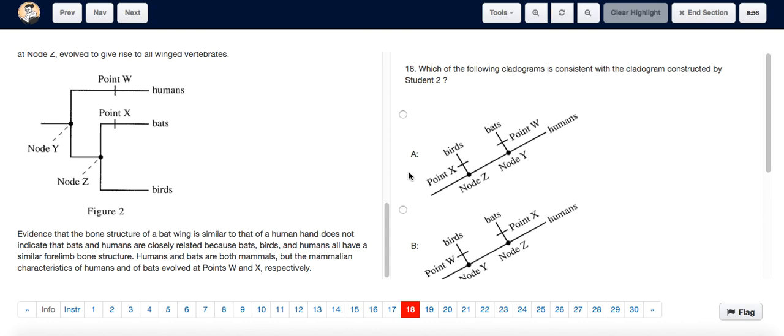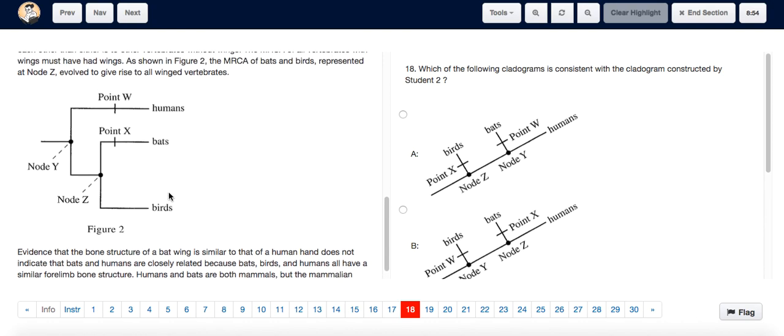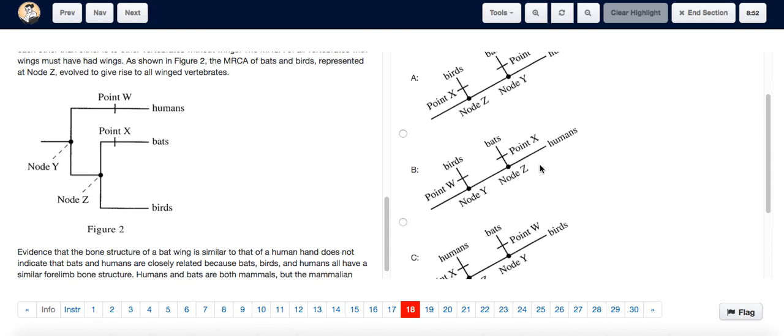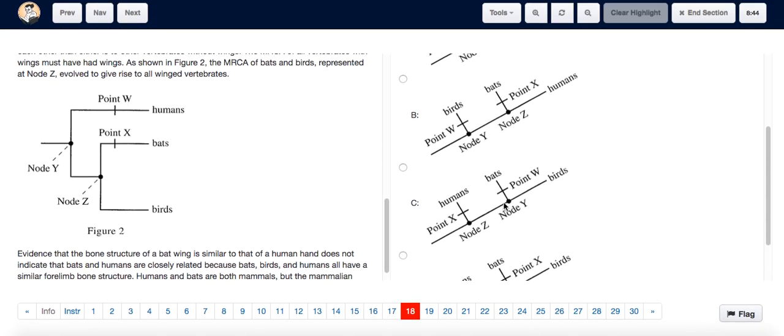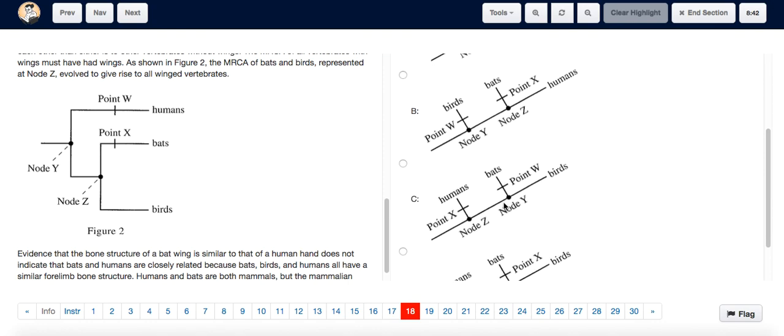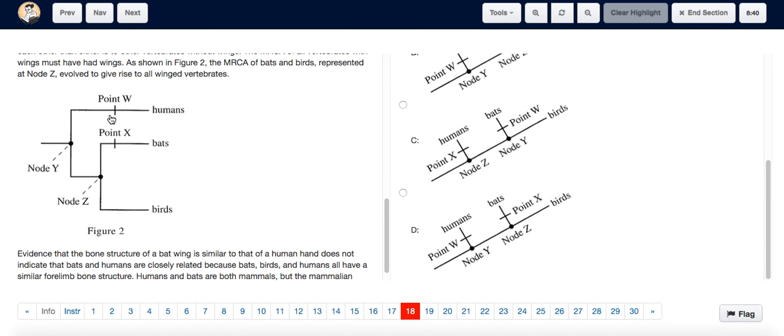For question 18, take note of the features of student 2's cladogram and figure out which of the cladograms in the options has the same features. We can see that point W leads to node Y, and that happens only in option B and option D. But we see that point W is for humans, which is only in option D, not in option B.